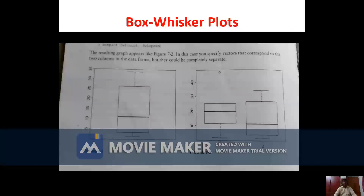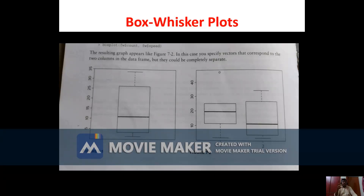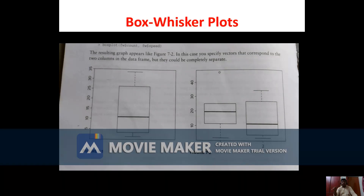Figure 7.1 shows one box with hinges as box edges representing quartile information, with a thick horizontal line indicating the median. Figure 7.2 shows two samples — count and speed — plotted together. For one sample we display without whiskers and for multiple samples the whiskers are shown.